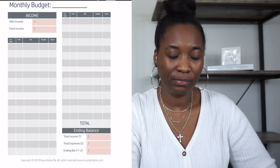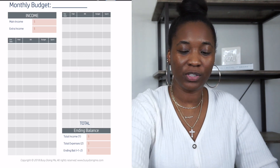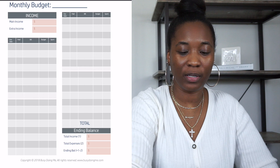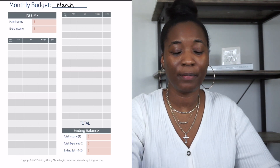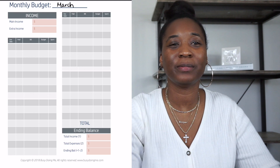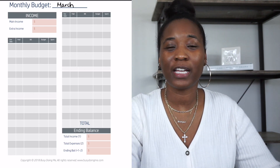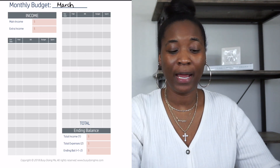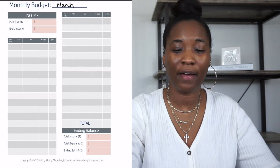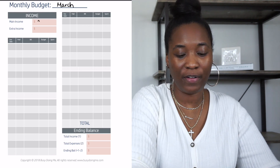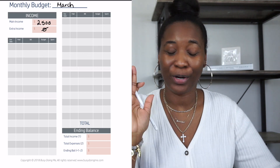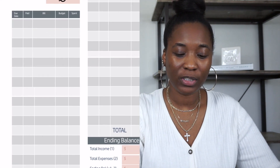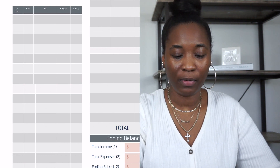Let's start with Jesse's monthly income. On this monthly budget sheet, you're going to write in the date — the month — and this is March. In the income section, you write your main income and any extra income, such as side hustle income, tax money, selling items, or anything like that. Main income is whatever comes from your job.